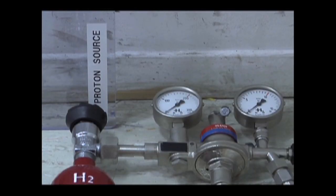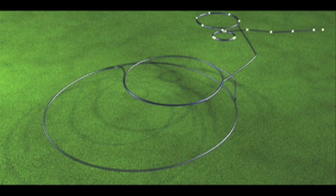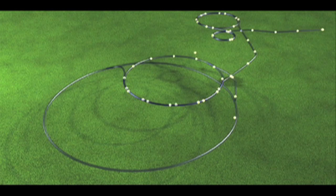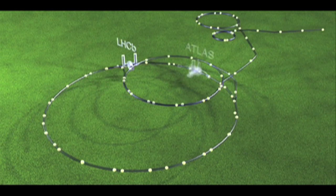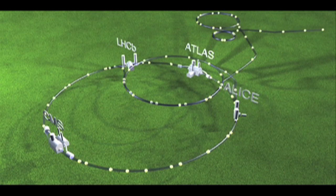Protons are fit into one end and sped up to almost 300 million meters per second, which is the speed of light, when they are smashed into protons coming from the opposite direction. Four detectors with different instruments are placed around the LHC to monitor the collisions.